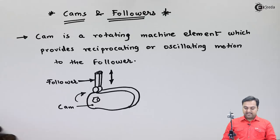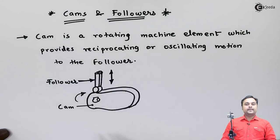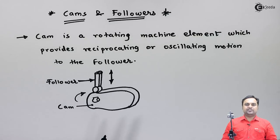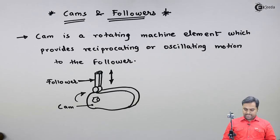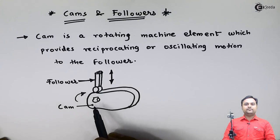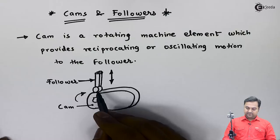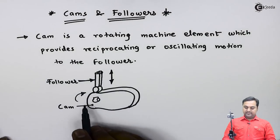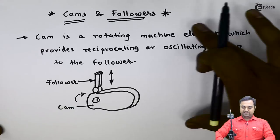This mechanism can be used in many applications. Cams and followers are used for operating the valves of an IC engine — the inlet valve and exhaust valve of an internal combustion engine are operated with a cam and follower mechanism. Similarly, in paper cutting machines and lathe machines, cam and follower mechanism is used.